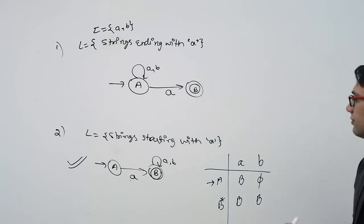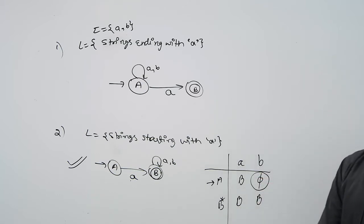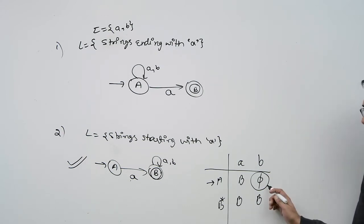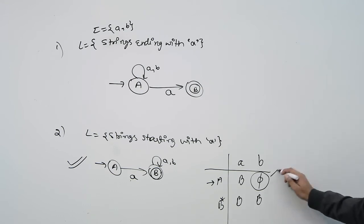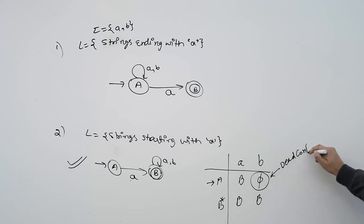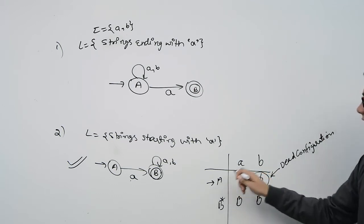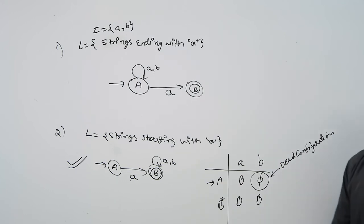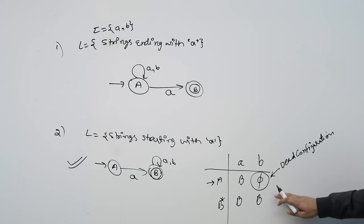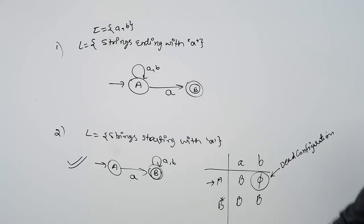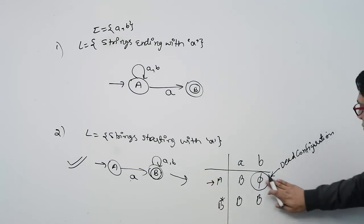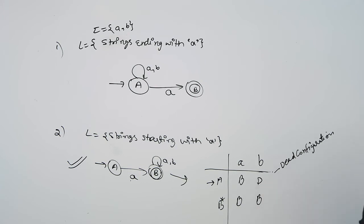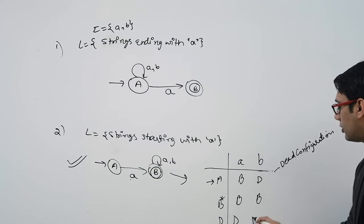In this transition table, the only thing making it an NFA is the symbol Phi — the empty set or empty state. If we can somehow eliminate this empty state by an equivalent state, we can make it a DFA. This empty state is actually representing a dead configuration — meaning if we are in state A and get 'b', that particular transition will be dead. To make it a DFA, remove this dead configuration and replace it with a dead state D. Write D for all transitions from D.